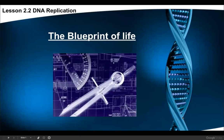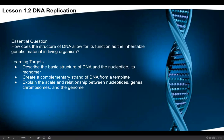Here we go folks, Lesson 2.2: DNA Replication. DNA is the inheriting factor inside of ourselves, and we can pass on our genetic information from one generation to the next. The essential question for the lesson is: how does the structure of DNA allow for its function as the inheritable genetic material in living organisms? In other words, what type of molecule allows information to be passed on from generation to generation?